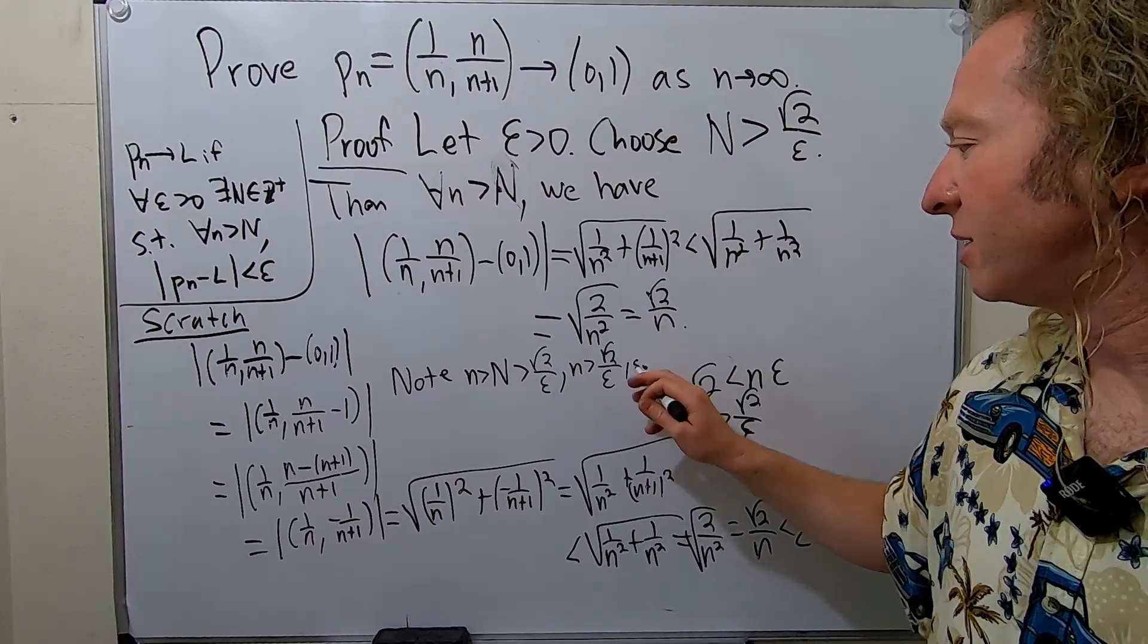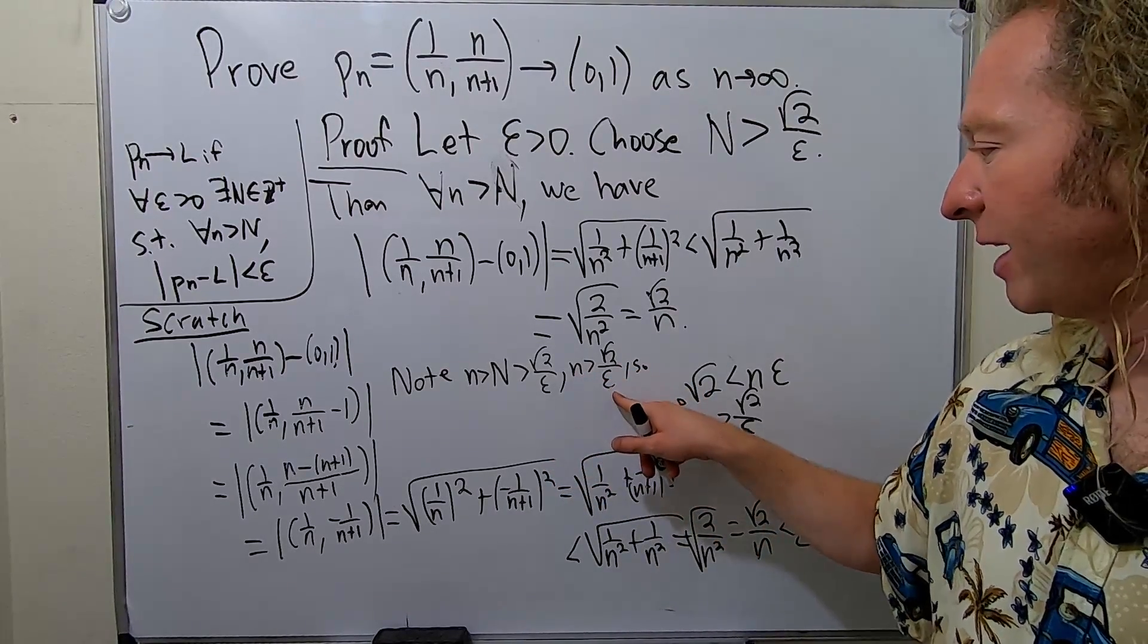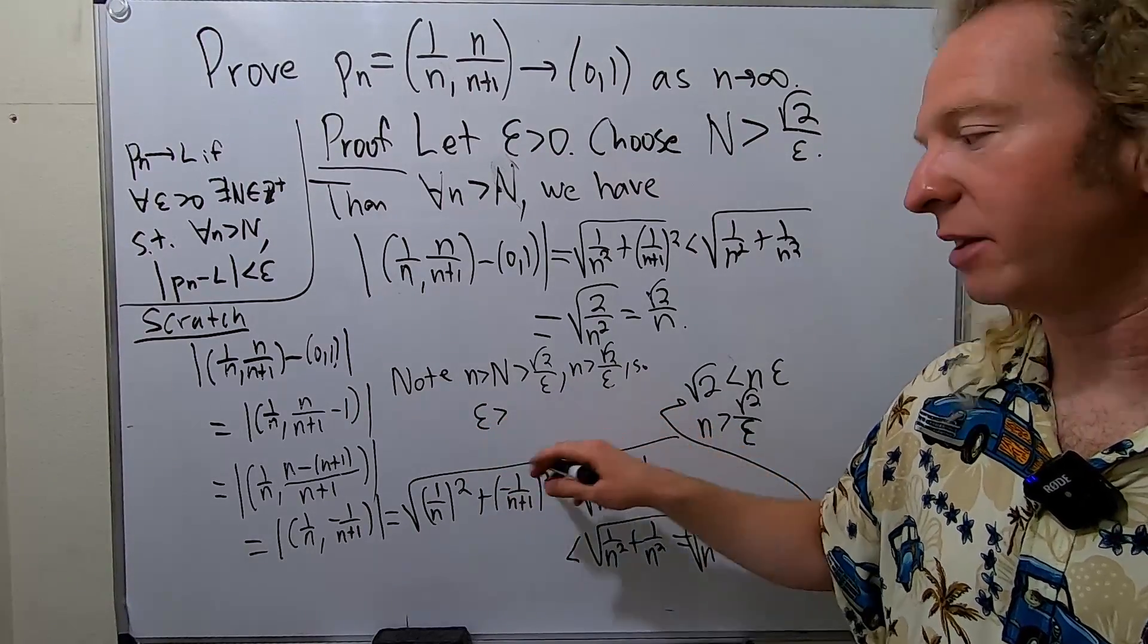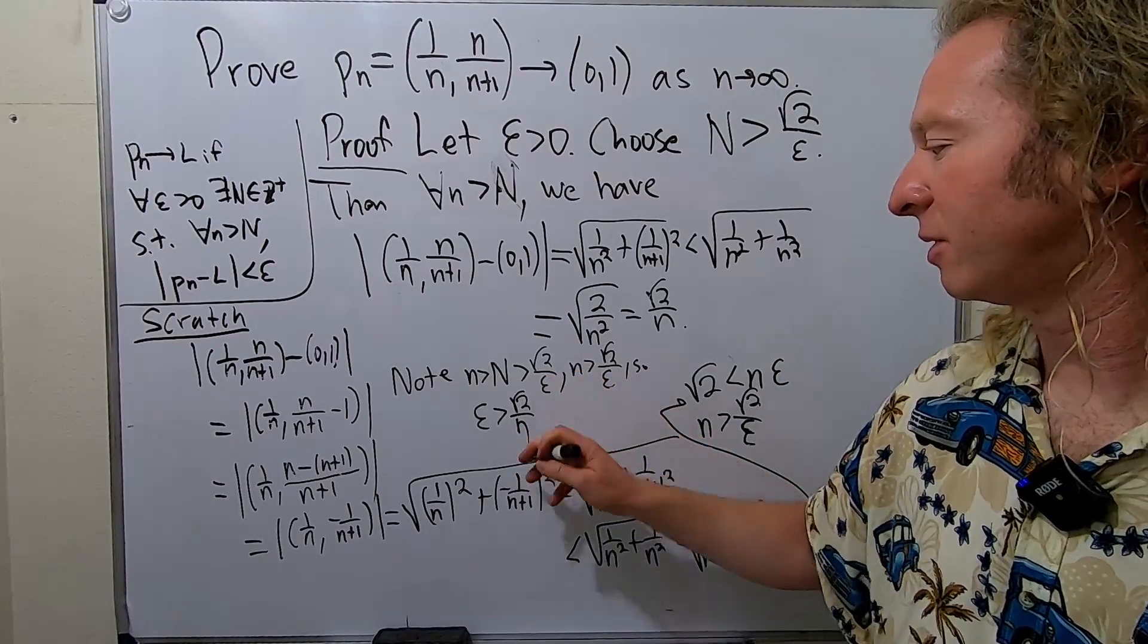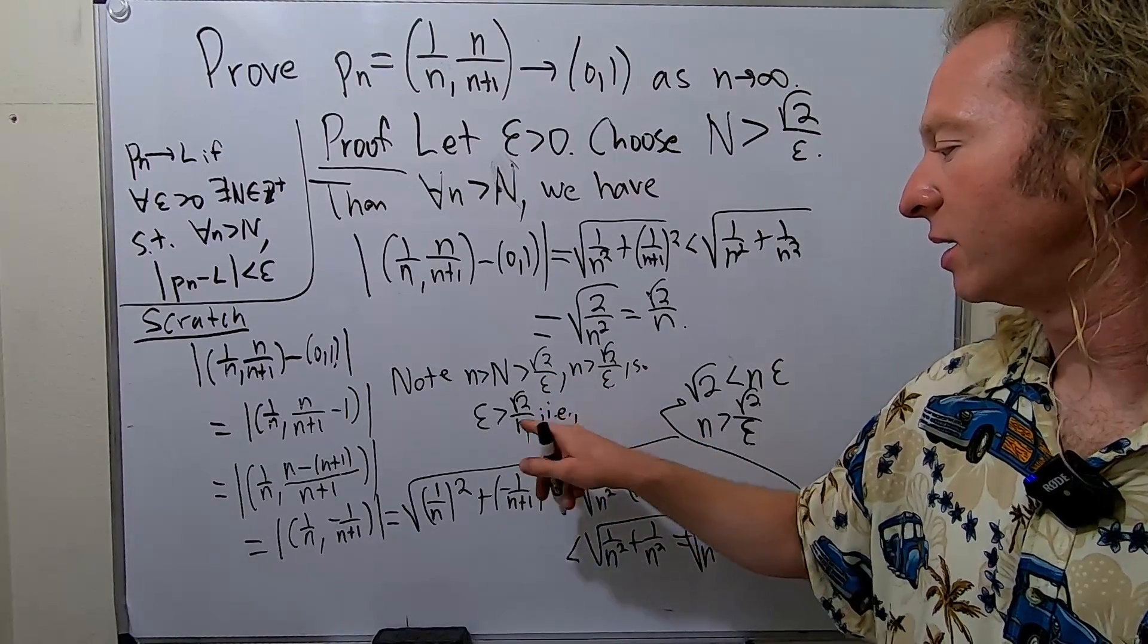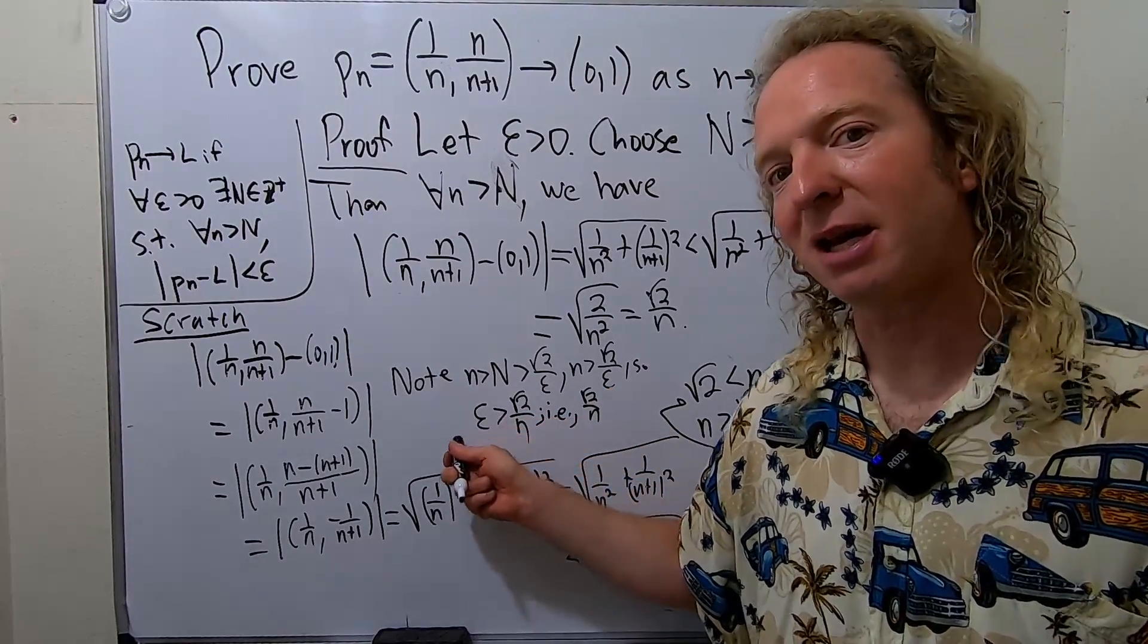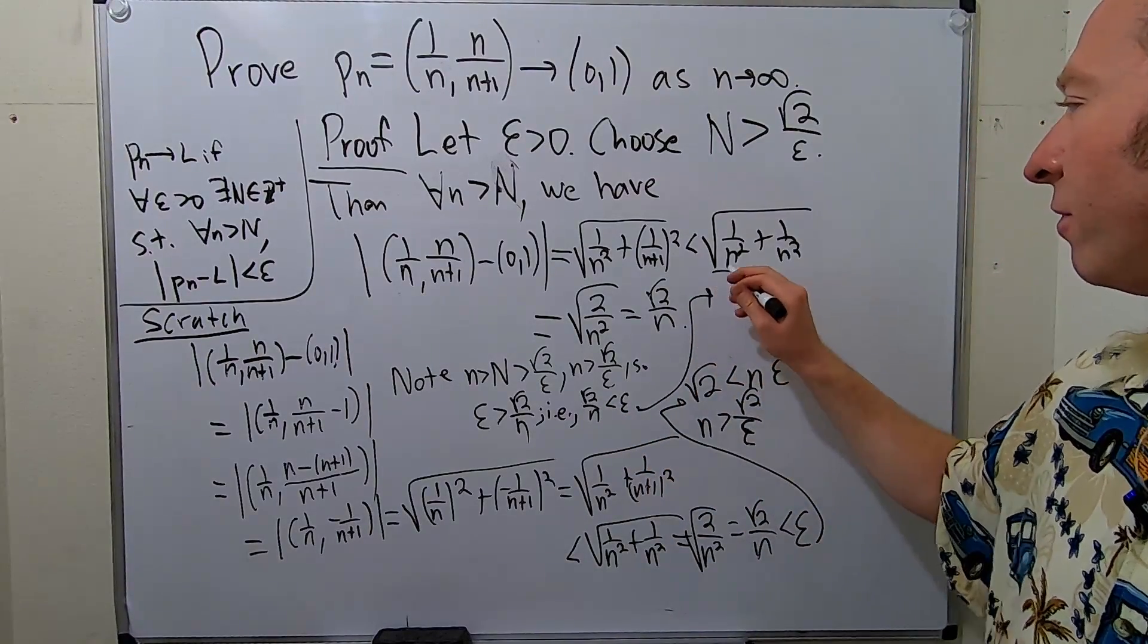So that means that dividing by n, multiplying by epsilon, multiplying by epsilon we get epsilon bigger than square root of 2 over n. So divide by n multiply by epsilon. So writing it again square root of 2 over n, reading it backwards, square root of 2 over n less than epsilon.